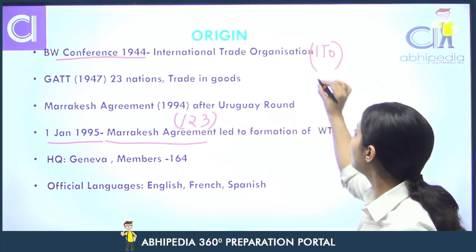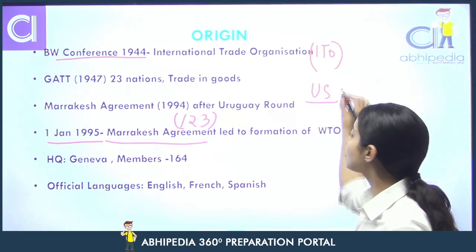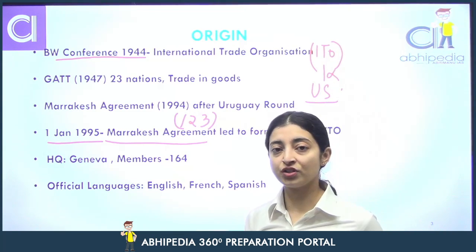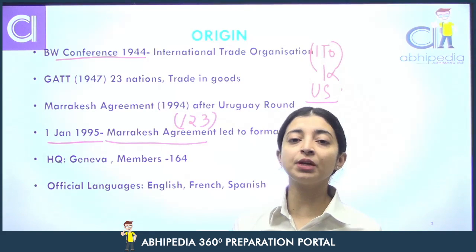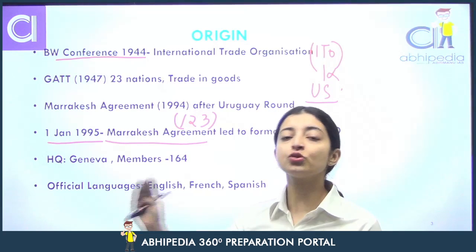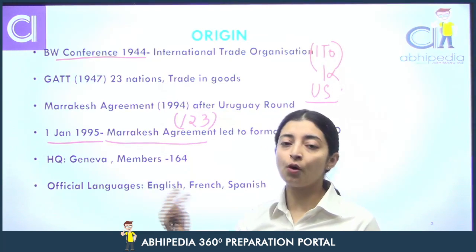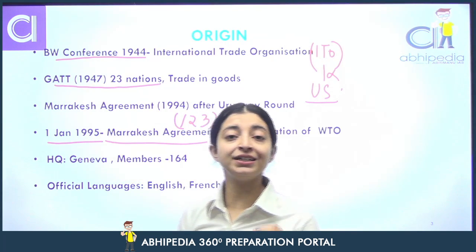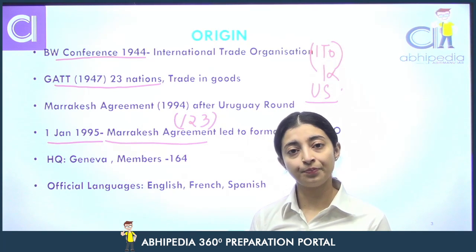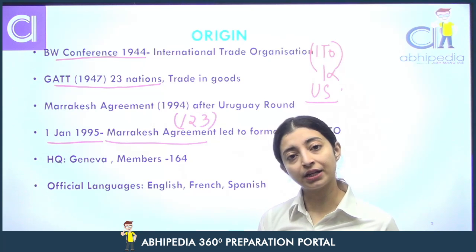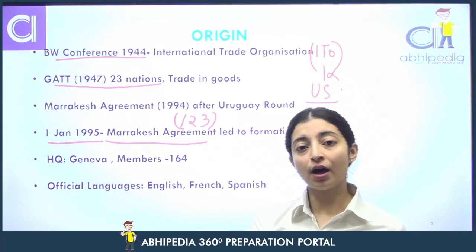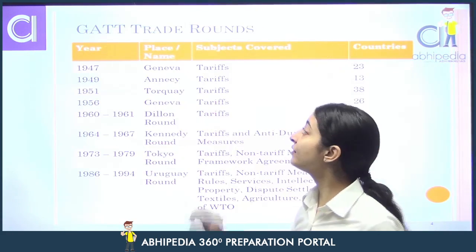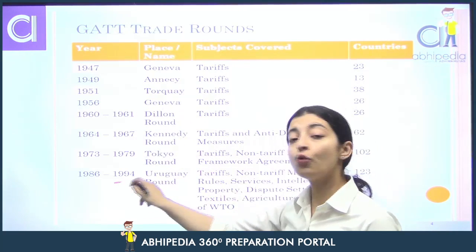But kyunki US, jo ki ek major economy tha, usne isko ratify nahi kiya — ITO ko. Is liye ye organization ban nahi paai. Toh meanwhile, baaki nations ne, around 23 nations ne decide kiya ki hum ek temporary multi-lateral agreement kar lete hain, jiske andar hum trade ki negotiations start kar dete hain, aur eventually we will form a body at global level. Toh ye GATT sign huwa uske baad. 23 nations ne 1947 mein General Agreement on Tariffs and Trade sign kiya, jisme trade negotiations start ho gayi. Ismein various trade rounds hone lage, 1947 se lekar 1994 tak.